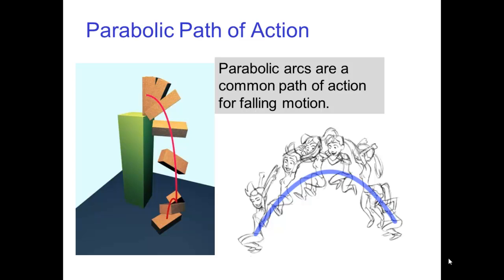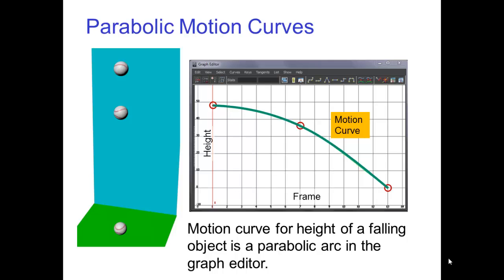One reason that this is useful is that parabolic arcs are a common path of action for falling motion. Furthermore, parabolic arcs are often appearing in the graph editor for accelerating motion. For example, the motion curve for the height of a falling object is a parabolic arc in the graph editor.